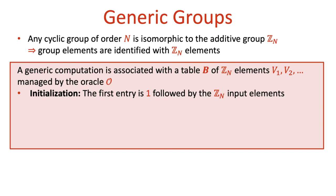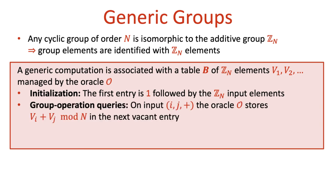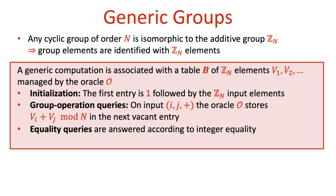The generic algorithm can produce two types of queries to the oracle: group operation queries and equality queries. To issue a query, the algorithm specifies the indices of the two elements it wishes to compare or to which it wants to apply the group operation. In response to a group operation query, the oracle adds up the two corresponding Z_n elements and places the result in the next vacant entry of the table b. In response to an equality query, the oracle simply compares the two corresponding Z_n elements from the table and answers accordingly.